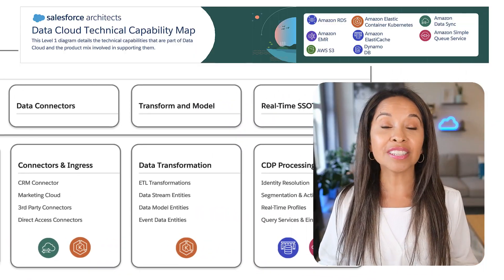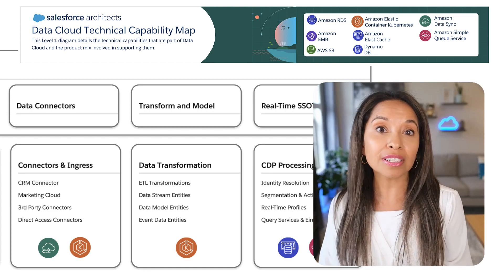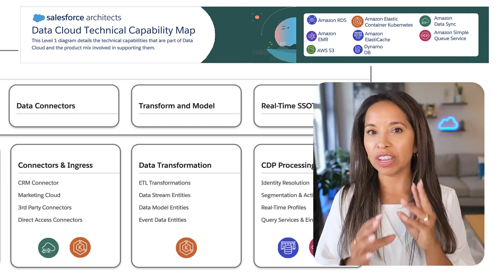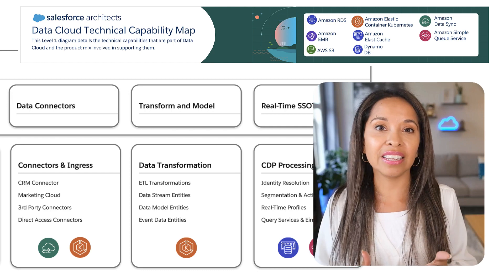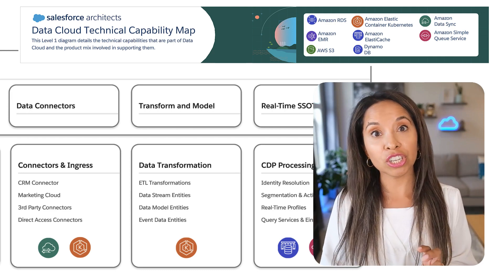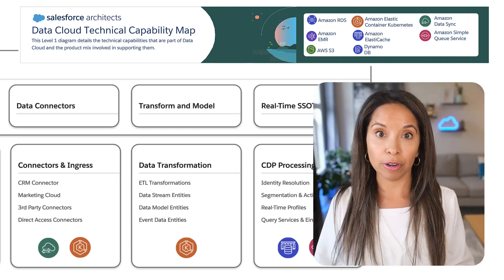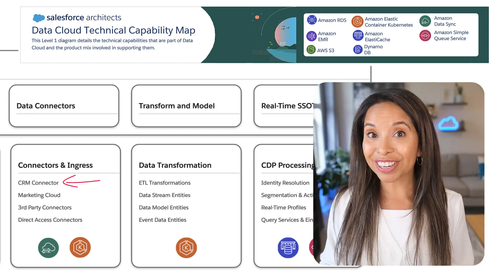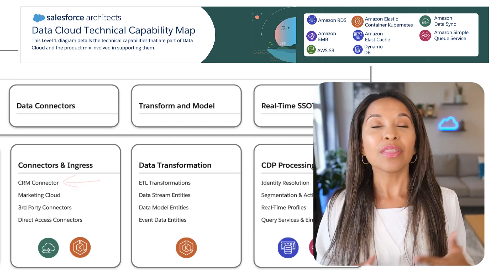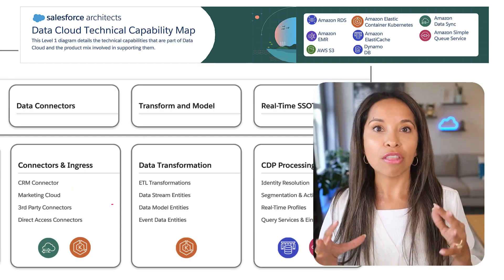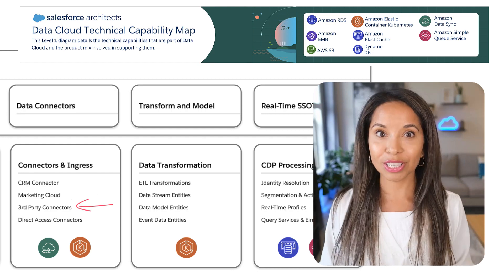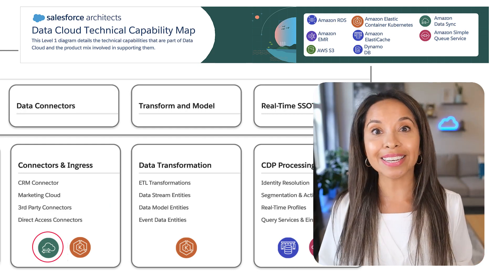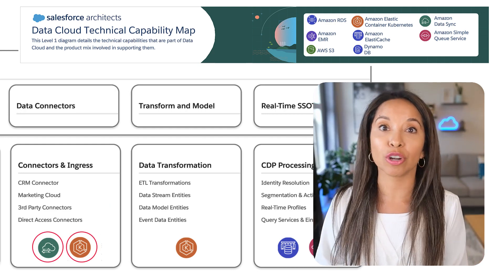Now, let's keep going to the right and talk about data source connectors. Our connectors and ingress allow data from other systems to enter data cloud, and we configure these data streams in the data cloud UI, which is exposed in the Salesforce platform. These connectors include things like the CRM connector for sales and service, the marketing cloud connector, and also all those great third-party connectors as well. These are all made possible with Amazon Datasync and Amazon Elastic Container Kubernetes.